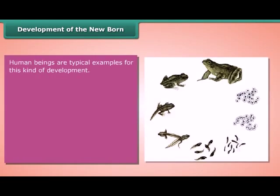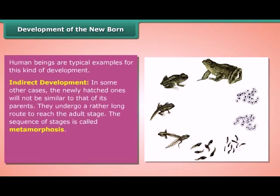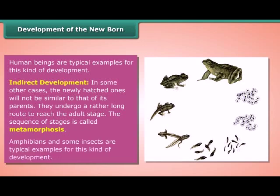Human beings are typical examples of direct development. In indirect development, the newly hatched ones will not be similar to their parents. They undergo a rather long route to reach the adult stage, and this sequence of stages is called metamorphosis. Amphibians and some insects are typical examples of indirect development.